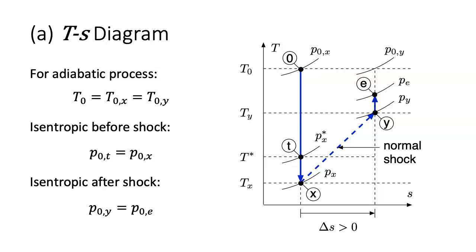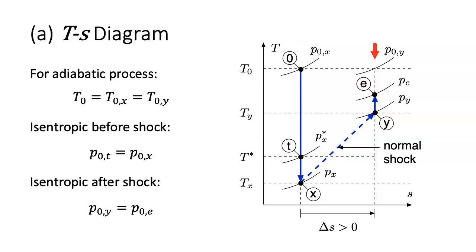For Part A, we plot the temperature-entropy diagram. The flow through the converging-diverging nozzle goes from state 0 in the large reservoir to state T in the throat, state X just before the shock, state Y just after the shock, and then state E in the exit plane. Note that the flow is adiabatic even across a shock, so the stagnation temperature and critical temperature are both constant. The flow before and after the shock is isentropic and lies along vertical lines. The entropy must increase across the normal shock, and the flow goes from supersonic to subsonic, so the temperature goes from below the critical temperature at state X to above it at state Y. Finally, the stagnation pressure decreases across the shock.